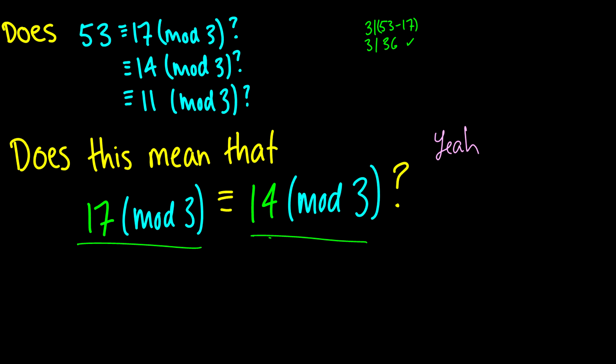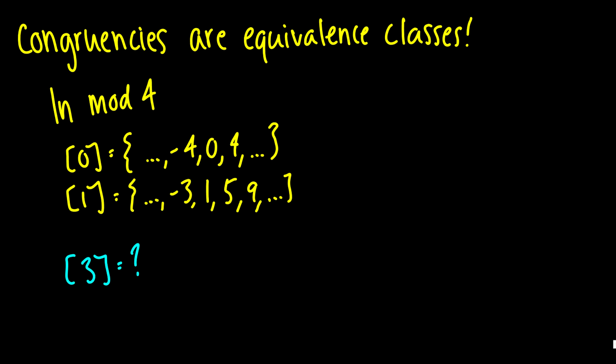But what does that really mean? What sort of relationship do we have here? If we know that two numbers mod each other, in fact, what we see here is that this 3 is the difference between these two numbers. Well, we call these numbers congruencies.